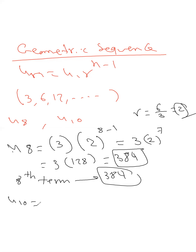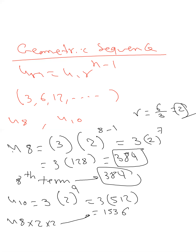To find u_10, it equals u_1 times r to the power of 9, which is 3 times 2 to the power of 9. You can also find u_10 from u_8 by multiplying u_8 by 2 twice: 384 times 2 equals 768, and 768 times 2 equals 1536.